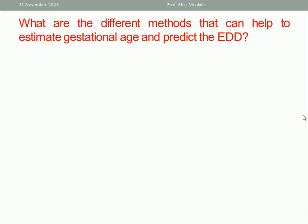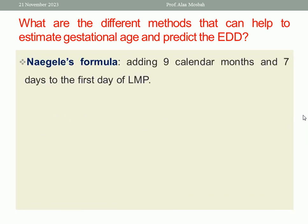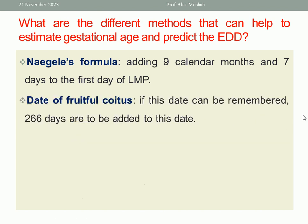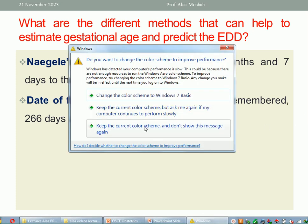Let us try with the first one: what are the different methods that can help to estimate gestational age and predict the expected date of delivery? First, using Naegele's formula. We add nine calendar months and seven days to the first day of the last menstrual period. Second, the date of fruitful coitus — if this date can be remembered by the lady, we add 266 days to this date.